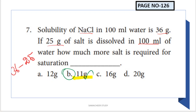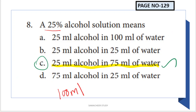Next question: 25% alcohol solution means 25 ml of alcohol is mixed in 75 ml of water, making a total of 100 ml. So 25% alcohol in 75 ml water is the right answer.